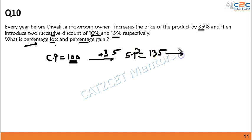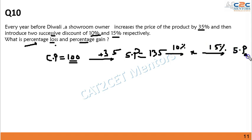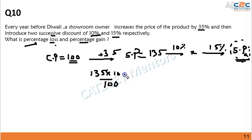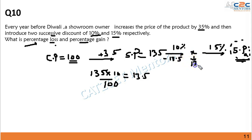Now on 135 rupees, I am going to apply a discount of 10%. Let this intermediate value be x. 10% of 135 is 13.5, so subtracting: 135 minus 13.5 gives x equal to 121.5 rupees.